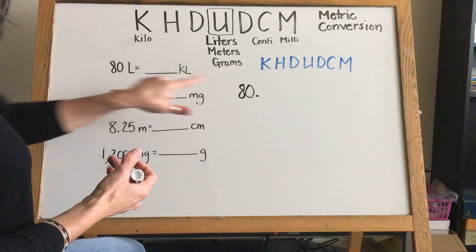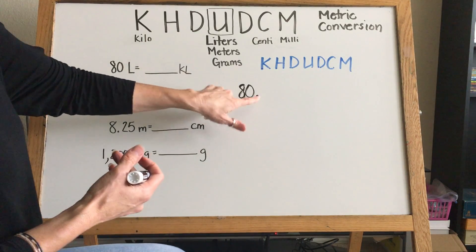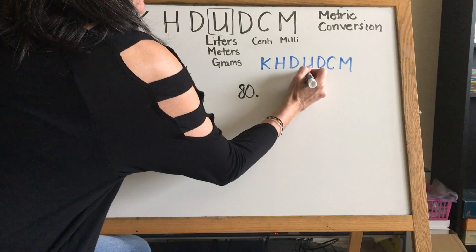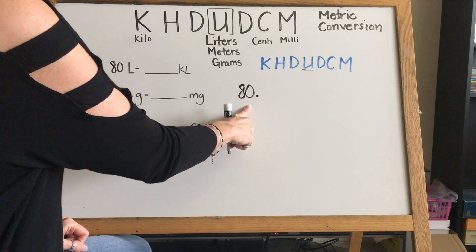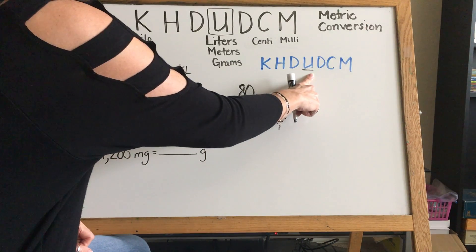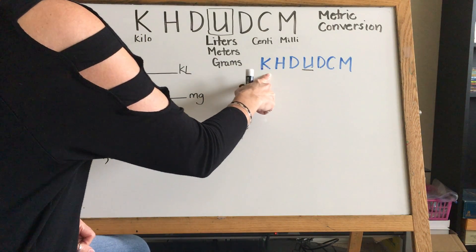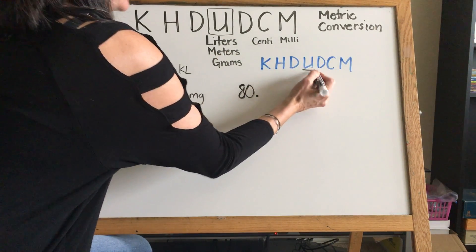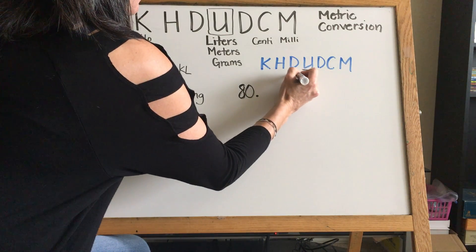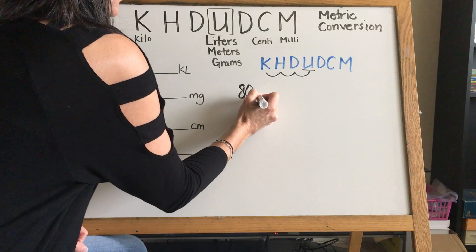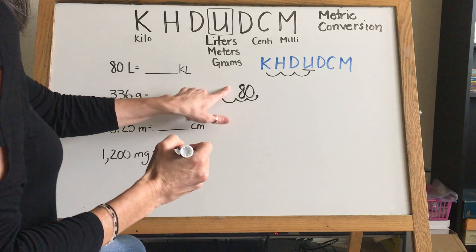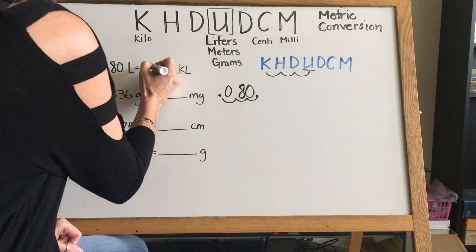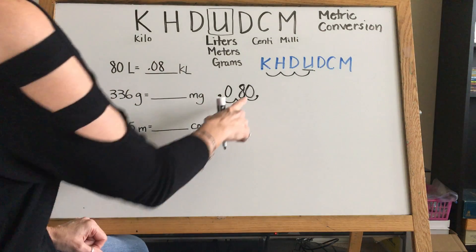We place our decimal on our number. We were given liters, which is the U — our basic unit of measure — so liters is right here on our chart. We were given 80 liters but they want us to convert to kiloliters, so we're dividing by 10, by 100, by 1000. To make it easy, we start at where we were given and move our decimal three times to the left: one, two, three. We don't have a number there, so we need to put a zero.